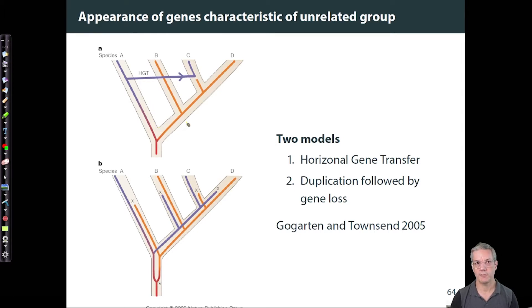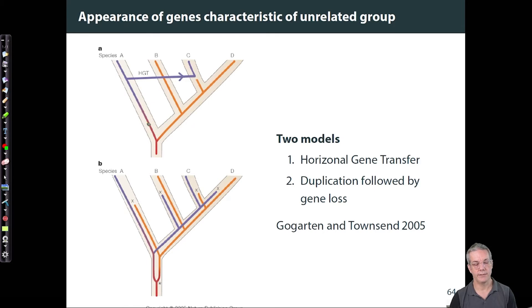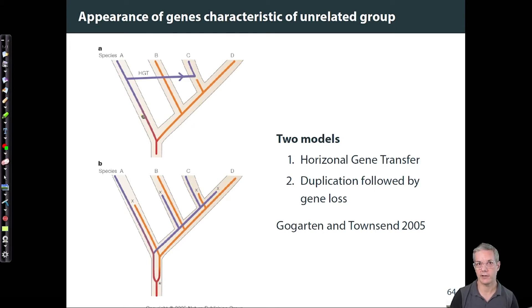What I mean by wrongly here is that the genes may influence the formation of the inferred tree and then put some groups close to each other where the species are not, and other groups far from each other where the species are close.